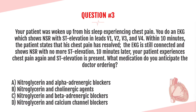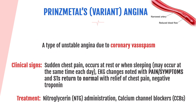The answer is D, nitroglycerin and calcium channel blockers. The patient gets woken from sleep with chest pain that goes away and then comes back. When the pain is present, ST elevation is present; when it's not, the ST elevation resolves. This is Prinzmetal's angina, or variant angina — a type of unstable angina due to coronary vasospasm. Vasospasm is a spasming of the arteries that restricts or stops blood flow, leading to cell death, tissue death, and major problems if not treated.